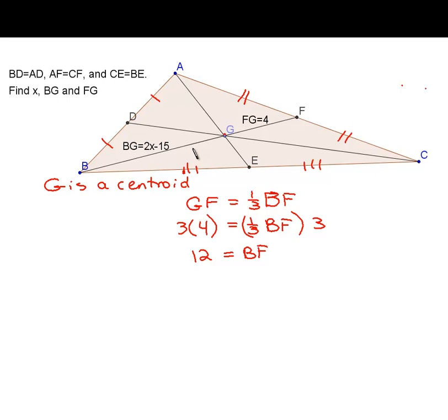So, if GF is four, how long is BG? Well, if we do twelve minus four, that's how long BG is, so BG must be eight units long. So, we know BG, we know BF, and we also need to find X.